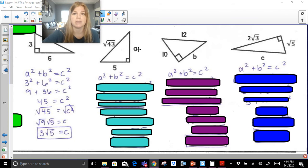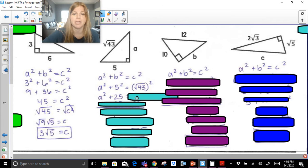Here I've got a leg of A, a leg of 5, and a hypotenuse of radical 45. So A stays A, I'm going to solve for that missing leg. B is 5, and my C is this radical 43. Now, radical 43, when I square it, this becomes A squared plus 25, and then the square root and squared cancel each other out. So it's just 43.